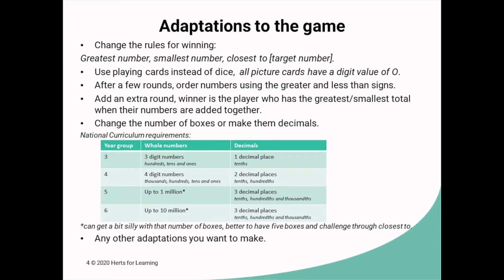There are lots of ways this game can be adapted. You could change the winning rules: greatest number, smallest number, or closest to a target. If you haven't got dice, you could use playing cards. You could order the numbers using greater than or less than signs. You could add an extra round where the winner has the greatest or smallest total when numbers are added, or the smallest difference when subtracted. You could change the number of boxes or use decimals. On screen you can see national curriculum requirements by year group for place value. For Years 5 and 6, numbers up to one million or ten million get unwieldy with that many boxes, so it's better to go for a decimal version or play closest to.